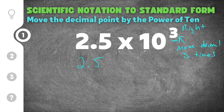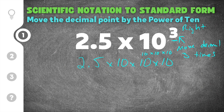10 to the third power is really like saying 10 times 10 times 10, so you have three 10s. You can rewrite this number as 2.5 times 10 times 10 times 10. When you expand it like this, it's much easier to see that 2.5 times 10 is 25, times 10 is 250, times 10 is 2,500.